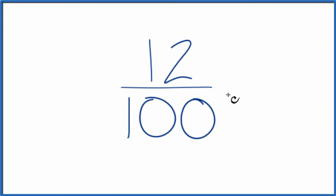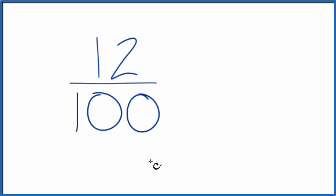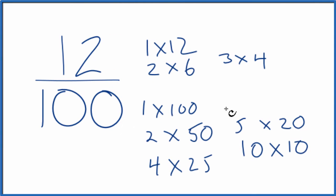We need to find a common factor, something that goes into 12 and 100. These are the factors for 12 and 100. We're looking for the greatest common factor that goes into 12 and 100, and it looks like 4 is going to be the greatest common factor.